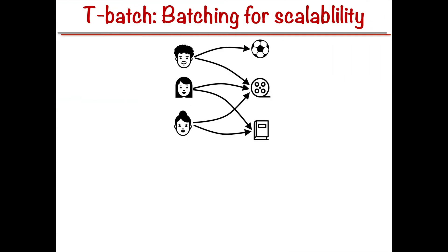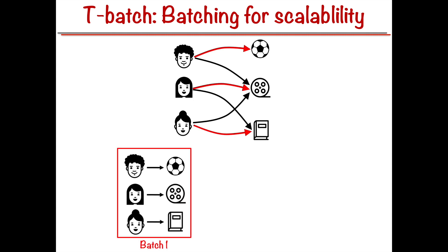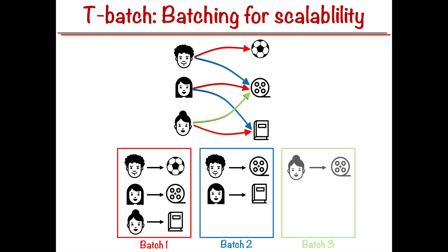To make JODI scalable to large networks, we develop a batching algorithm called TBatch. TBatch creates a sequence of batches such that all the interactions in each batch can be processed in parallel and processing the batches in sequential order maintains the temporal dependency of the network. This may make JODI scalable to very large networks.